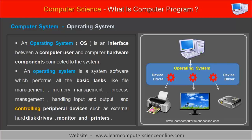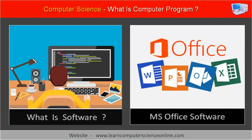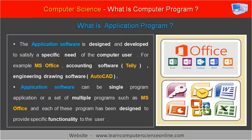The operating system itself is a type of system software. The application software or program is a term used for the program created for a specific purpose. The application software provides a specific functionality to the user. It can be a single program or group of programs used by the end user, also commonly referred to as an application, or simply an app. The application programs are designed to provide a user-friendly interface to the computer user and also provide the functionality to perform various tasks on the computer system.